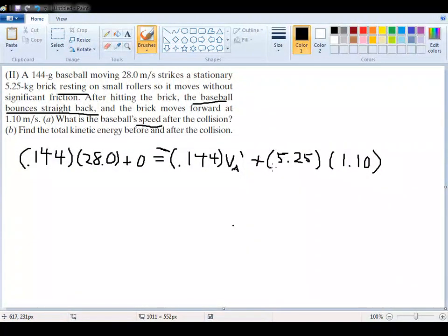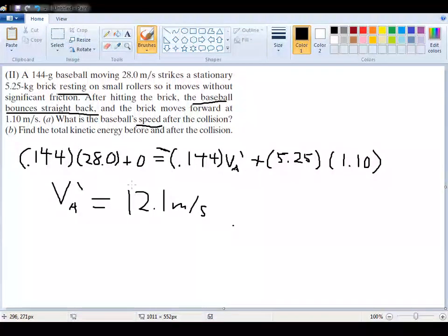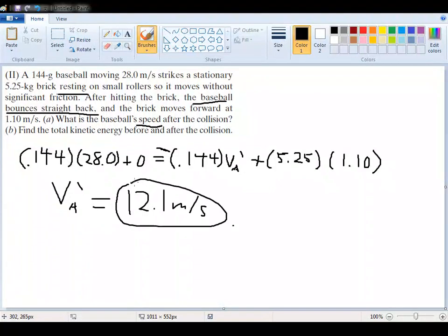So, solving for this, since you only have one unknown variable, you can pretty easily solve this to get va prime is equal to 12.1 meters per second. Or, if you're actually concerned with finding velocity, then you need to put a negative there, or at least write a little note after the magnitude specifying that it's the opposite. But that should be our answer for this part.